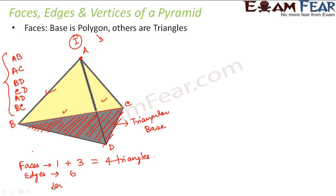What about vertices? The points that connect edges are A, B, C, and D — four points. You might wonder about the apparent intersection of lines in the image, but that is just a virtual dotted line representing a line that is not visible from the front. Dotted lines mean the line exists but is hidden. So that intersection is not an actual vertex. Therefore, in a triangular pyramid you have four faces, six edges, and four vertices.